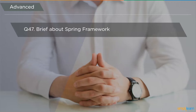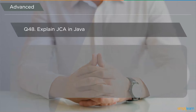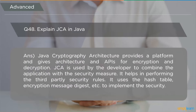The next question is: brief about Spring Framework. Spring is defined as an application framework and inversion-of-control container for Java. Its chief purpose is to create enterprise applications in Java, and its central features are conducive to any Java application. The following question asks to explain JCA. JCA stands for Java Cryptography Architecture — it provides a platform with architecture and APIs for encryption and decryption, helps developers combine applications with security measures, and uses hash tables, encryption, and message digests.